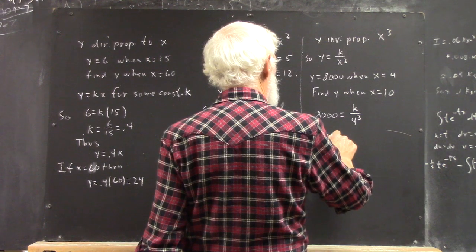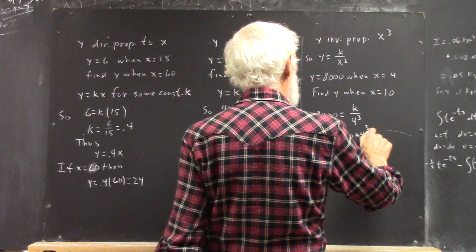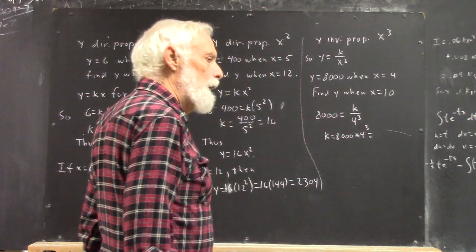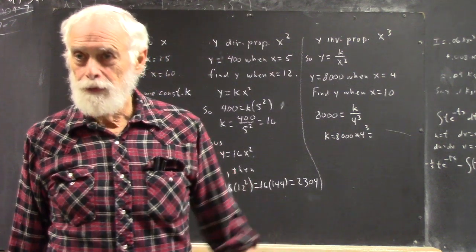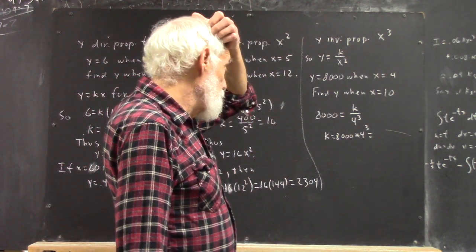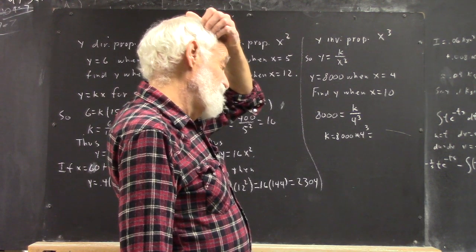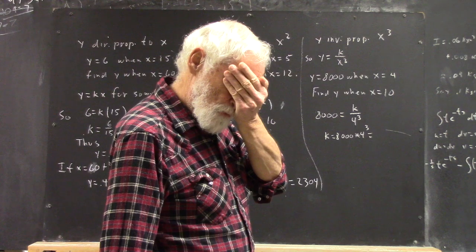k over 4 cubed. So the k is 8000 times 4 cubed. 4 cubed is 64. I much like those 64's. 64 times 8000 I think is 512,000. Yeah.